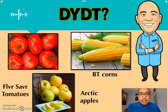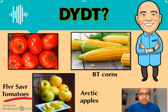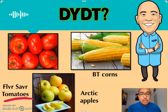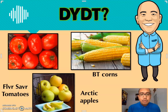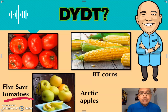The first one is the Flavor Saver Tomatoes — they are actually genetically modified tomatoes. These tomatoes have a longer and more flavorful shelf life than normal tomatoes, due to the presence of a gene that suppresses the production of polygalacturonase — the cell wall degrading enzyme responsible for fruit ripening.